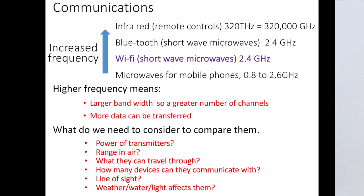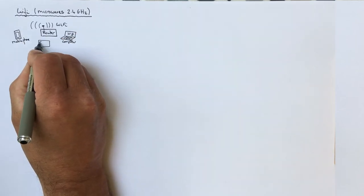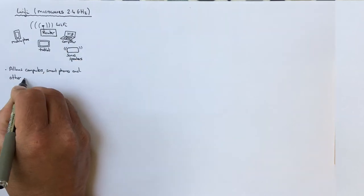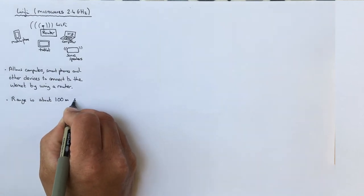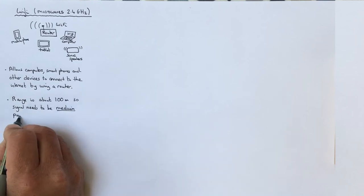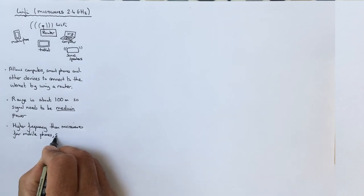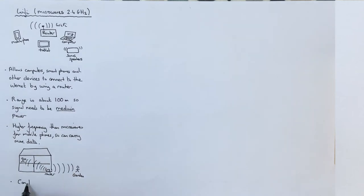Now we are going to consider Wi-Fi. Wi-Fi uses microwaves of about 2.4 GHz. Wi-Fi allows smartphones, computers and other devices like tablets or Sonos speakers to be connected to the internet via a router. The range of Wi-Fi is about 100 meters so the signal needs to be medium power. Because Wi-Fi is of a higher frequency than microwaves for mobile phones, they carry more data which is an advantage. The other advantage is Wi-Fi can travel through walls so it doesn't need line of sight.